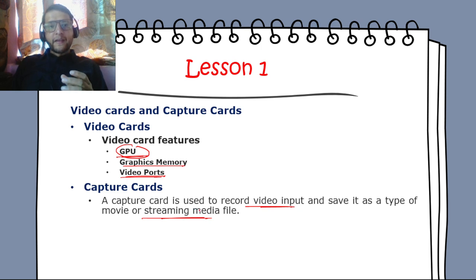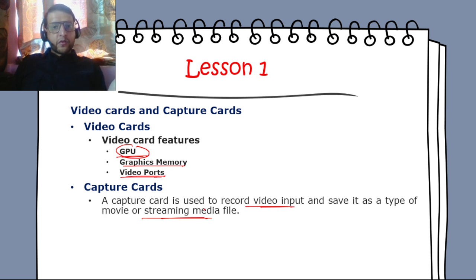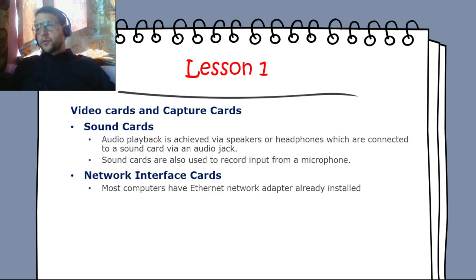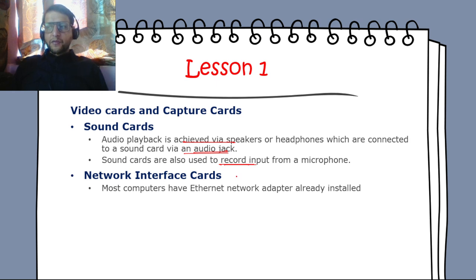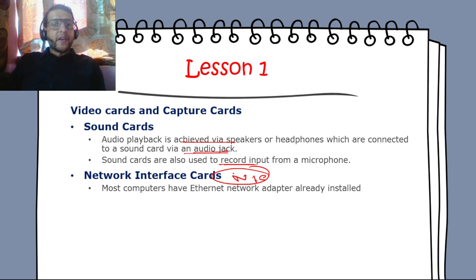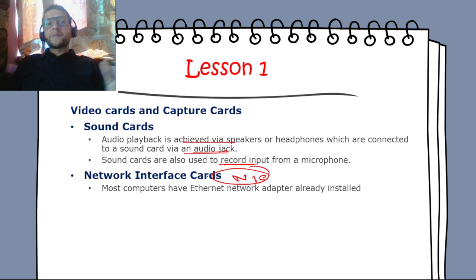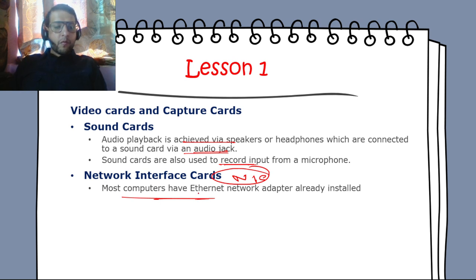Sound cards provide audio playback through speakers or headphones connected via an audio jack, and can also record input from a microphone. A NIC — Network Interface Card — connects the computer to the internet. Earlier NICs came as separate expansion cards, but most computers now have an Ethernet adapter already installed, including both wired and wireless.